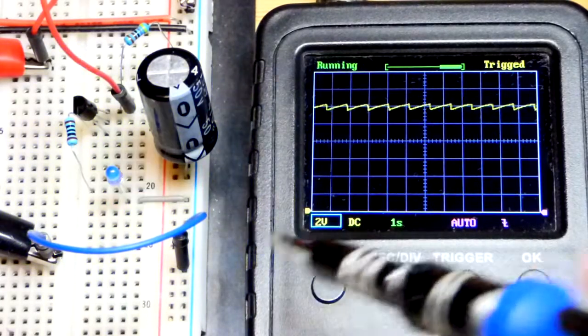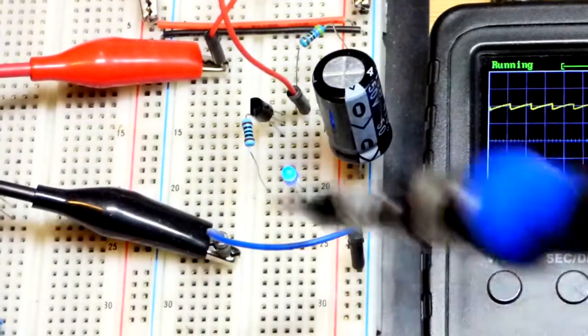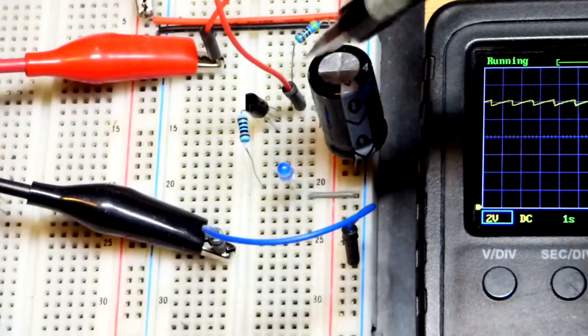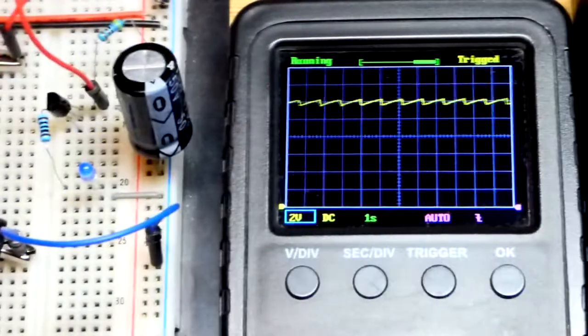And finally, we got the pocket oscilloscope here. I have the alligator clips clipped to those jumpers. And then I can just plug them where I want. That's up to where the capacitor and the resistor meet.